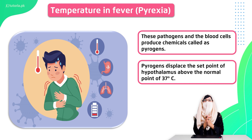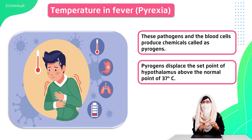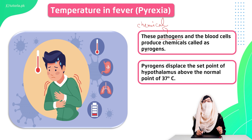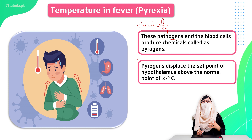Due to some conditions, our body's thermostat setting can change. Pathogens — harmful foreign bodies which cause diseases — release certain chemicals in your body called pyrogens. When these pyrogens reach your brain, the brain raises the thermostat above 37°C. This causes the body to increase heat production, which raises body temperature and produces a fever.